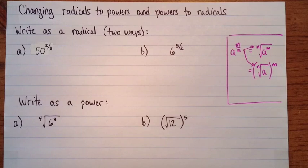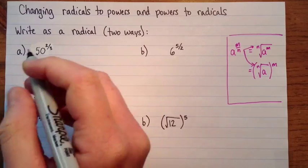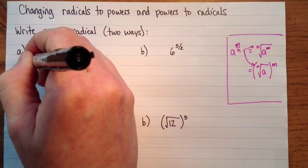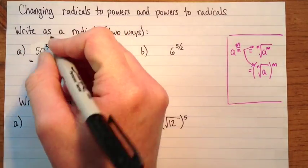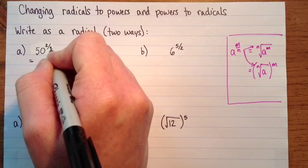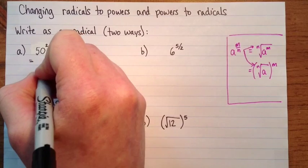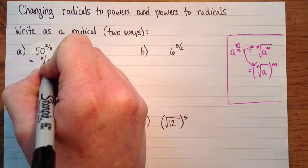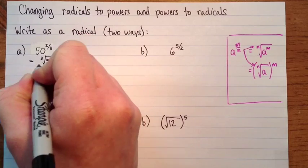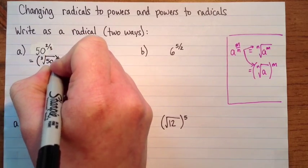Okay. So write as a radical in two different ways. We have fifty to the exponent two-thirds. So, the three is going to be the root. I'm going to take a cube root. So I can either do a cube root of fifty, and then square all of that.